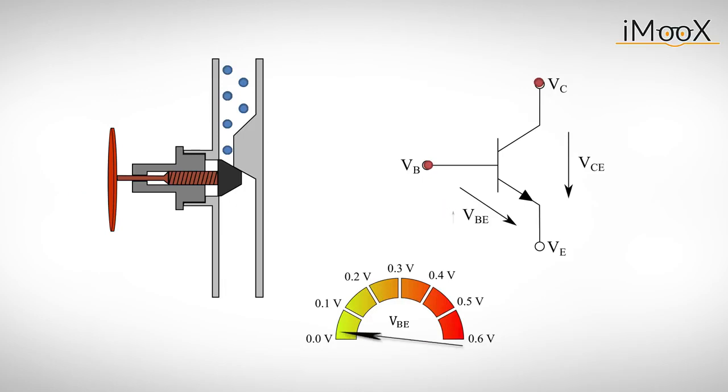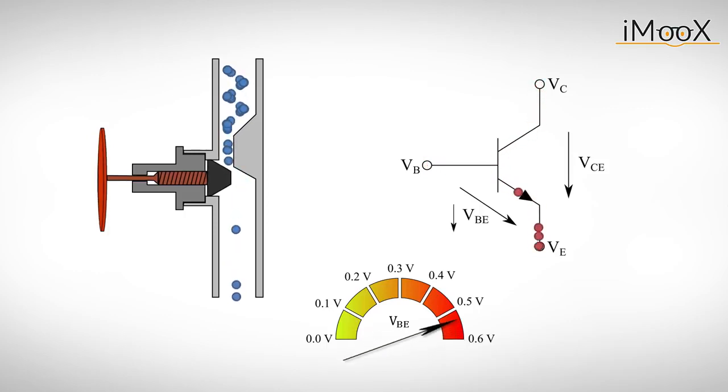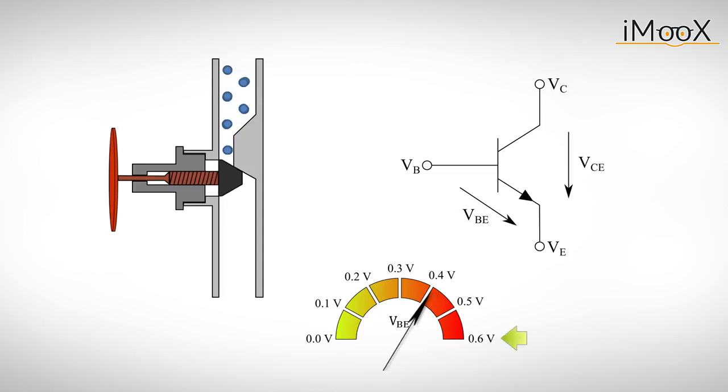As the base emitter voltage rises, nothing happens at first until the forward voltage drop of the base emitter diode is reached. At this point the valve opens and a large current can flow. When the base voltage is decreased below the bias voltage of approximately 0.6V, the current flow will stop.